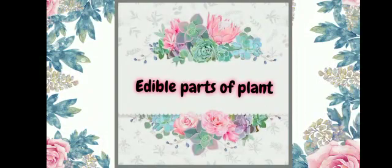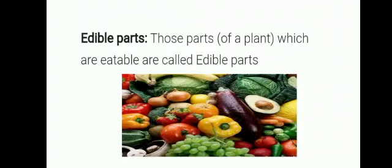Green plants are the primary sources of food. Various parts of plants such as roots, stems, leaves, flowers, fruits and seeds are used as food by us. The parts of a plant which can be eaten are called edible parts of the plant, while the other parts which cannot be eaten by us are called non-edible parts of the plant.